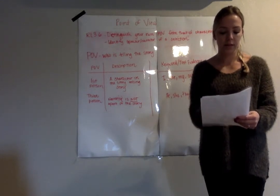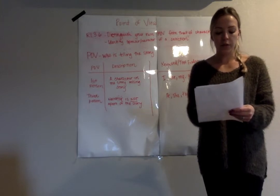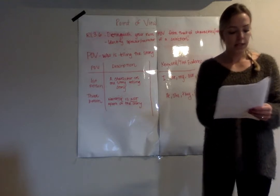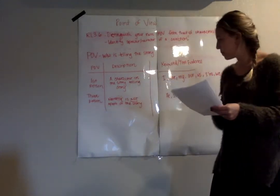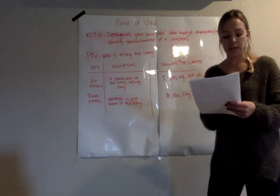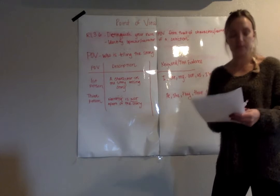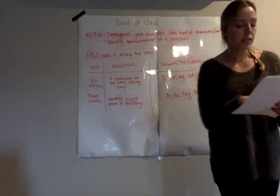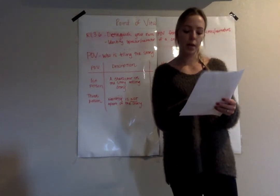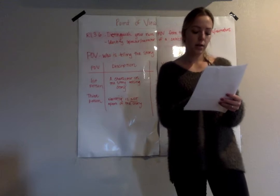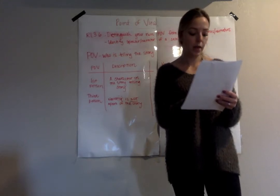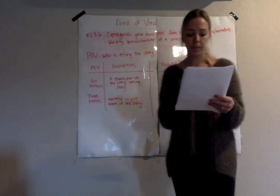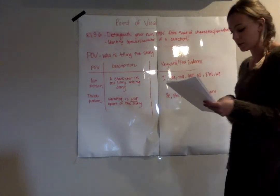The Three Little Pigs. Once upon a time, there were three little pigs who lived in a village with their mother and father. The time soon came for them to move out. The first pig decided to build a house herself out of straw. Soon, a wolf came walking by when he saw the first pig. 'Little pig, little pig, let me come in,' he said. 'Not by the hair on my chinny chin chin,' replied the pig. 'Then I'll huff and I'll puff and I'll blow your house down,' growled the wolf. And he began to blow so hard that the straw blew away.